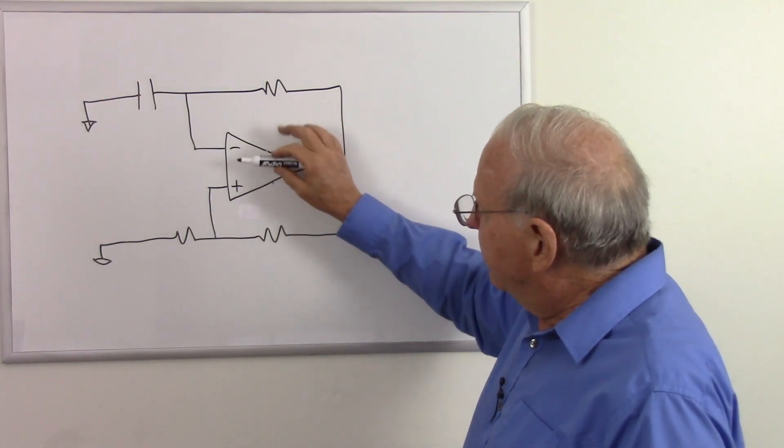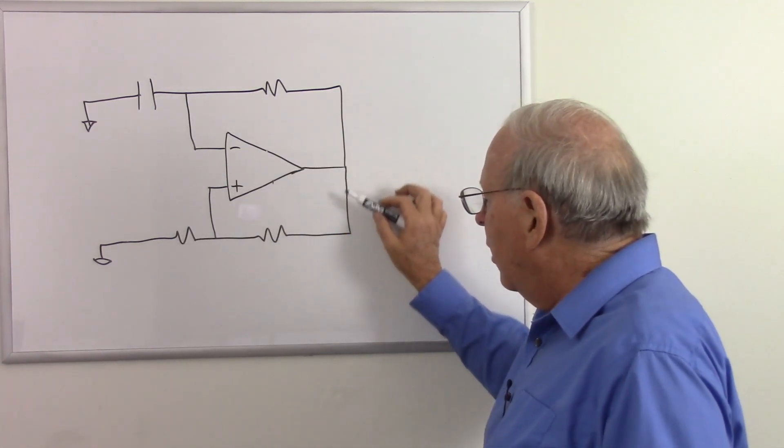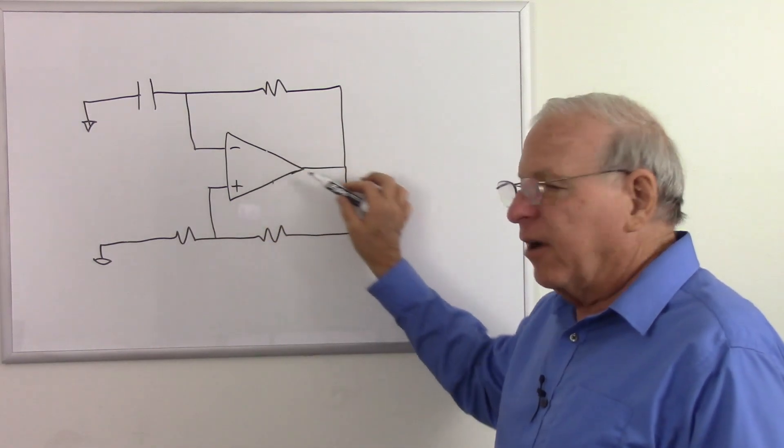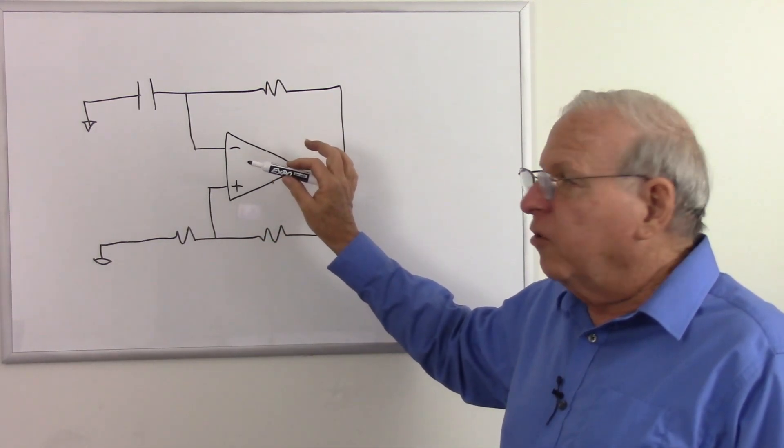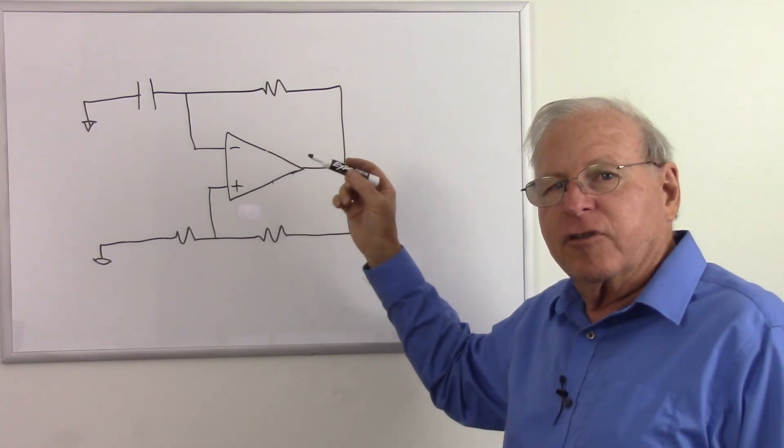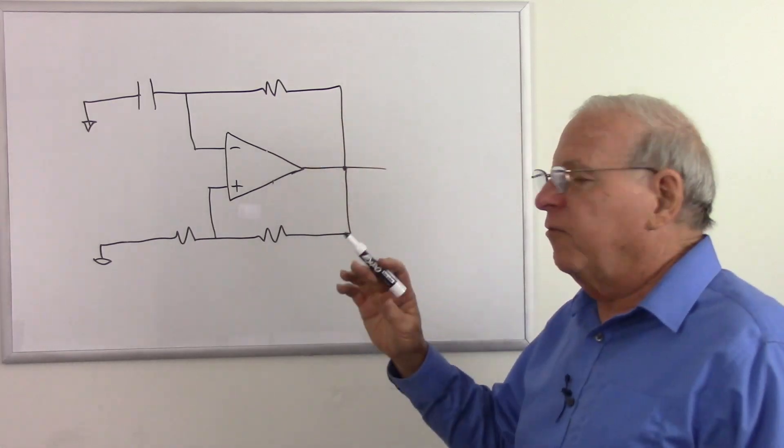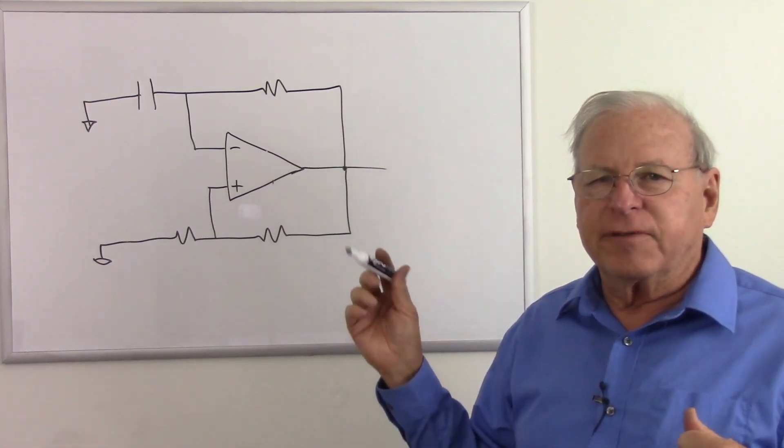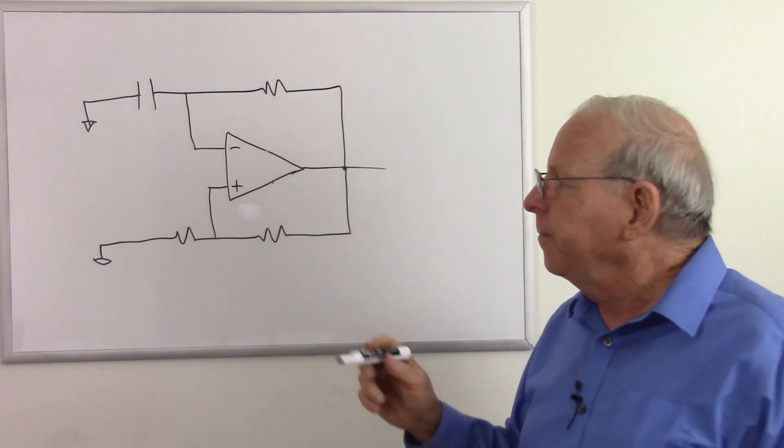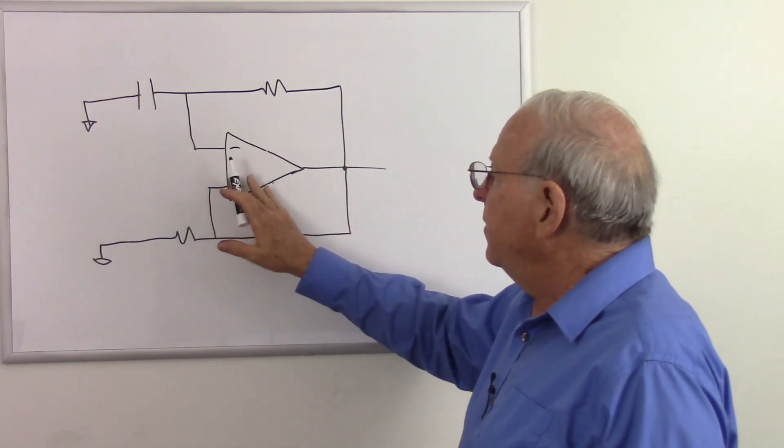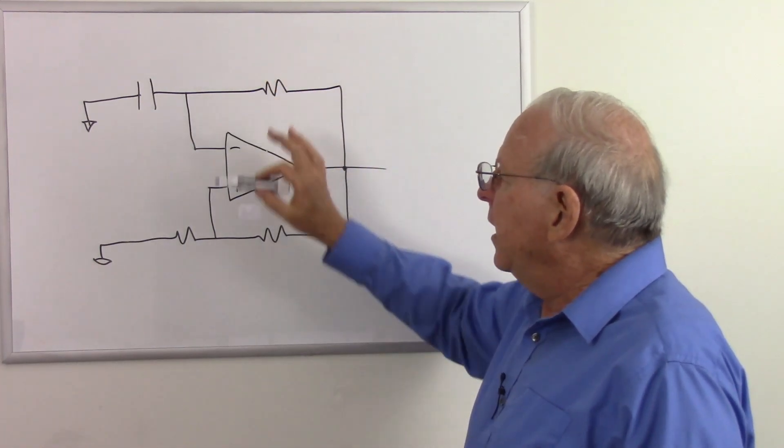And so what do we have? Do we have the elements we need for an oscillator? Well, we have our positive feedback coming from the output to here. There's that. We have our amplification. But of course, our amplification is greater than one. So it's going to saturate and give us square waves. And so our output will be here. Once again, if you want to see a detailed description of how this works, you can look at my other video that I have in the description below. But we have the elements we need. We have our positive feedback and we have our timing circuits and our delays and everything else we need.